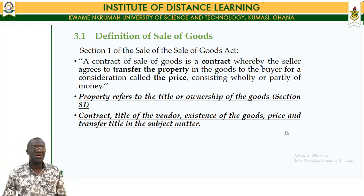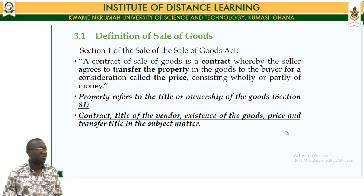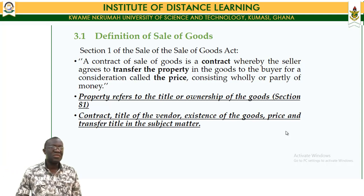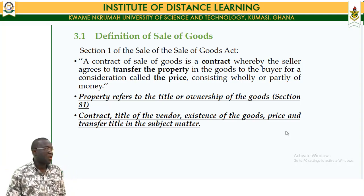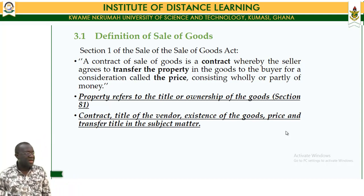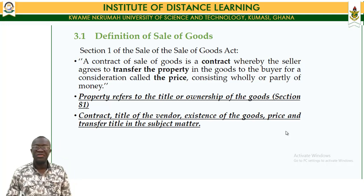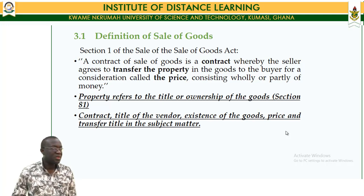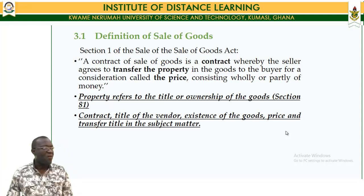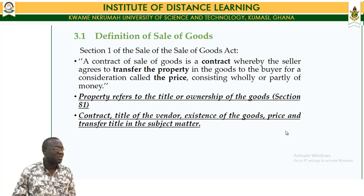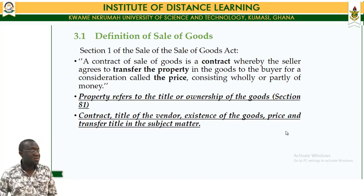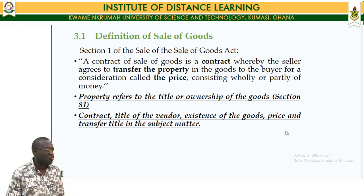So what do we mean by sale of goods? When we take the Act itself, Section 1 of the Sale of Goods Act states that a contract of sale of goods is a contract whereby the seller agrees to transfer the property in goods to the buyer for a consideration called price, consisting wholly or partly of money. So buying and selling is a business contract — you sell goods and somebody agrees to pay.